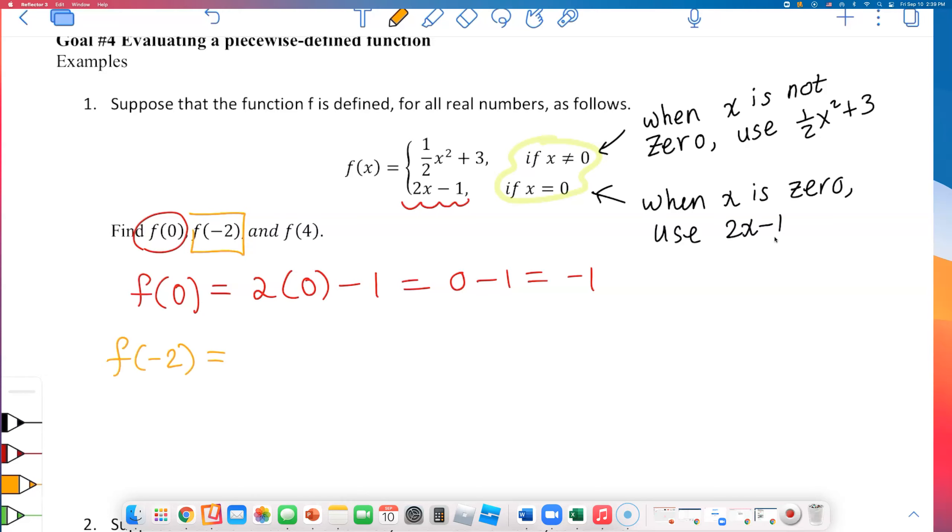So next number, I have f of negative 2. Well, they did say when X is not 0, use that half of X squared plus 3. So I'm going to have to plug that negative 2 into this piece. Half of negative 2 squared plus 3. Negative 2 squared is 4, and half of 4 is 2. Finally, if I do 2 plus 3, I will get 5. So when I evaluate f of negative 2, that came out to be 5.